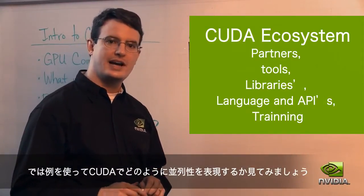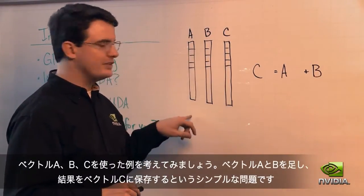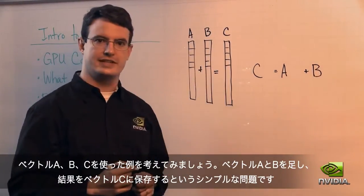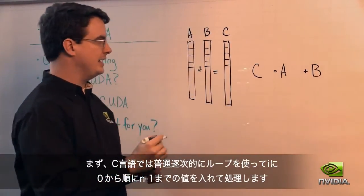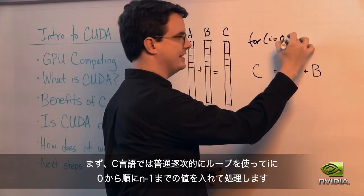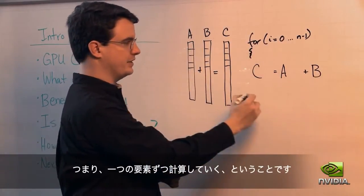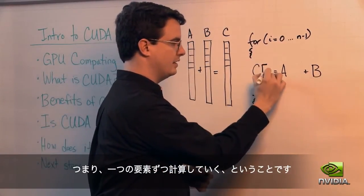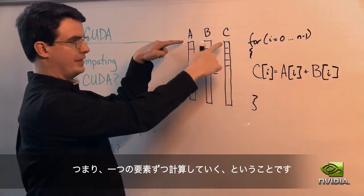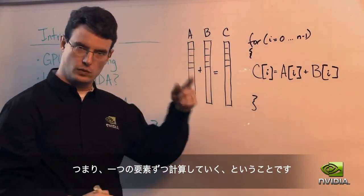Let's take a look at an example that shows how CUDA makes it easy to express all this parallelism. Consider a case where we have three vectors, A, B, and C, and we simply want to add vectors A and B and store the result into C. In C, in the sequential case, this would simply look like a loop that says for i equals zero to n minus one, where n is the length of the vector. Then one element at a time, we add the zeroth element to the zeroth element, then the first, then the second, and so on — one at a time in series.